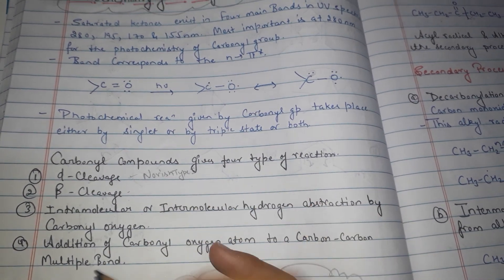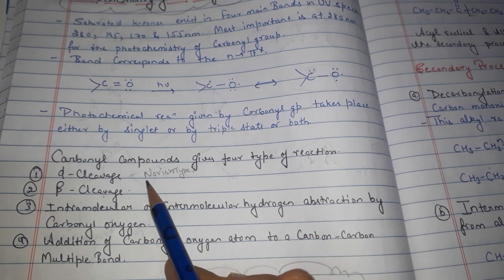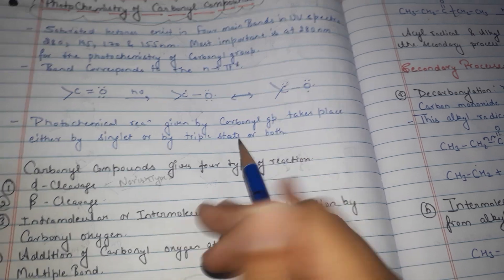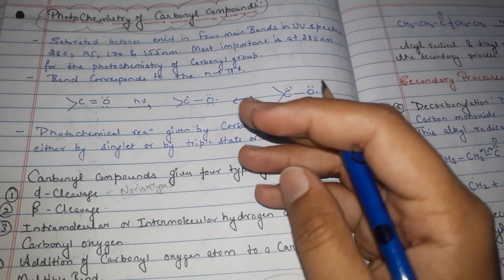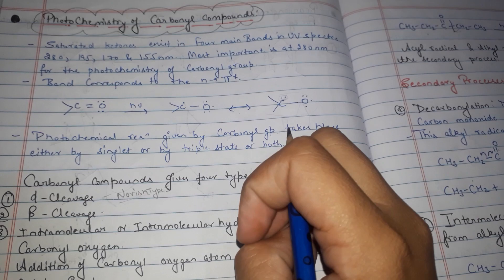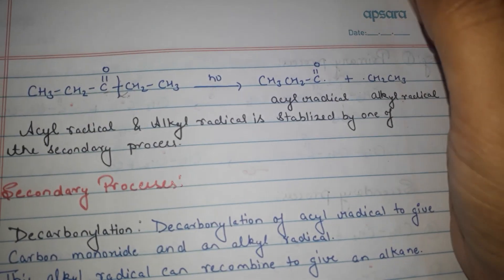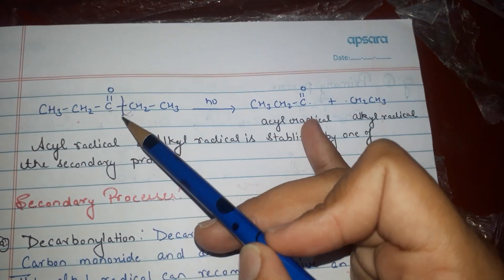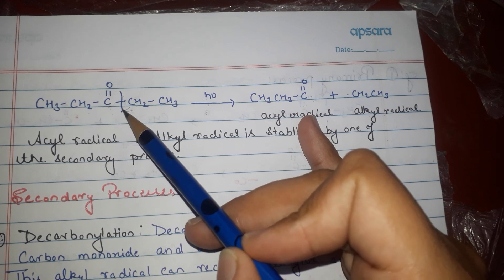In this video we discuss Norrish Type 1 reaction, which means alpha cleavage. This is a Type 1 reaction and it consists of three steps. The first is the primary process, in which there is a cleavage of the alpha bond. This functional group is at the alpha position of this bond.